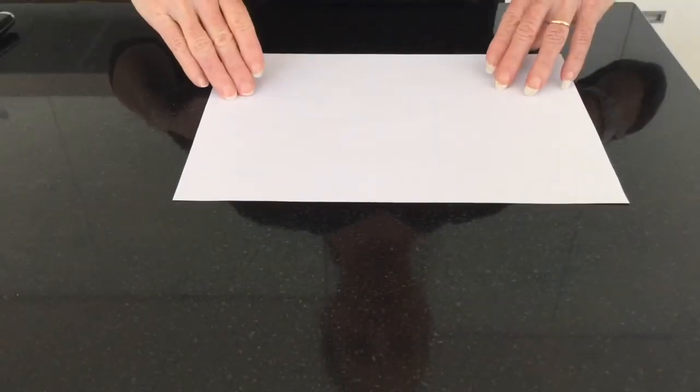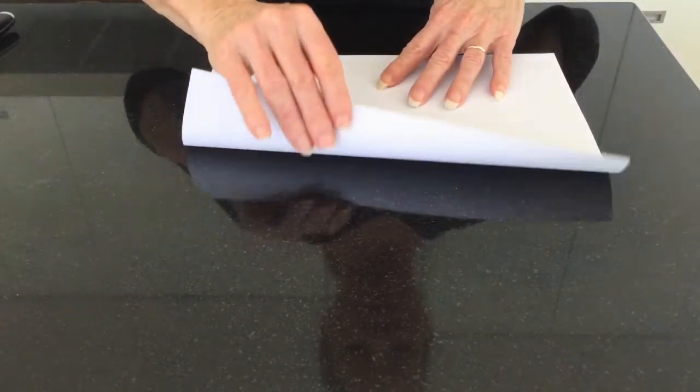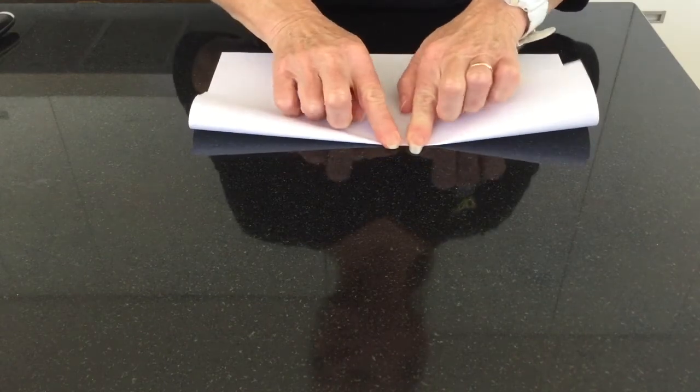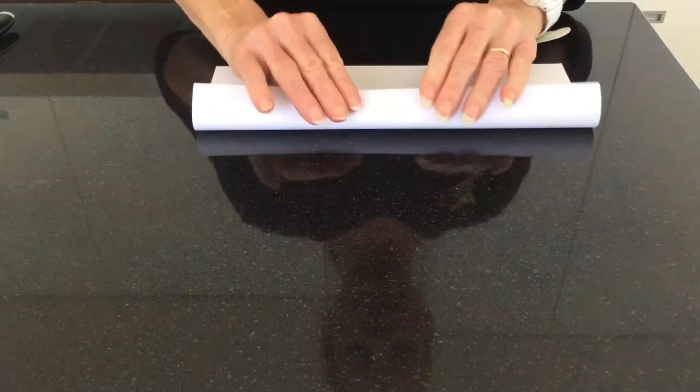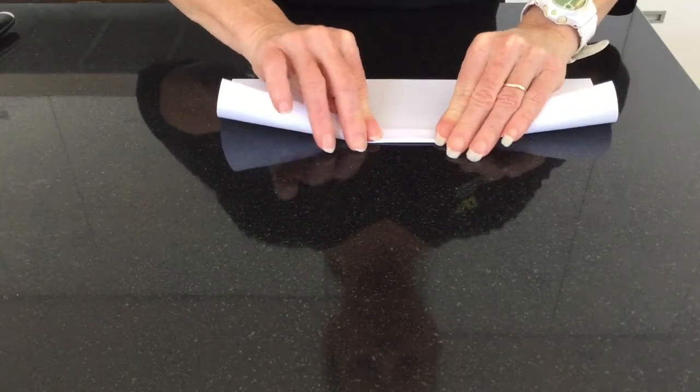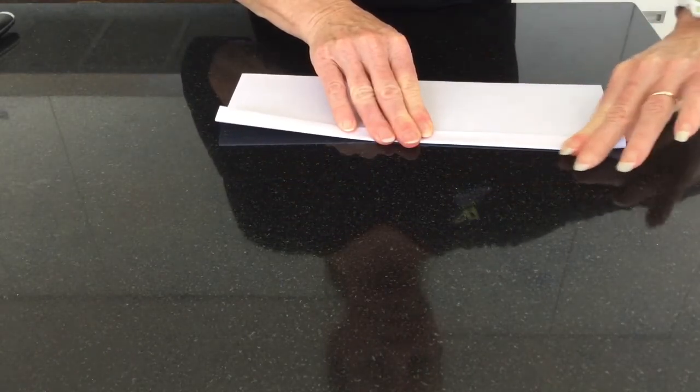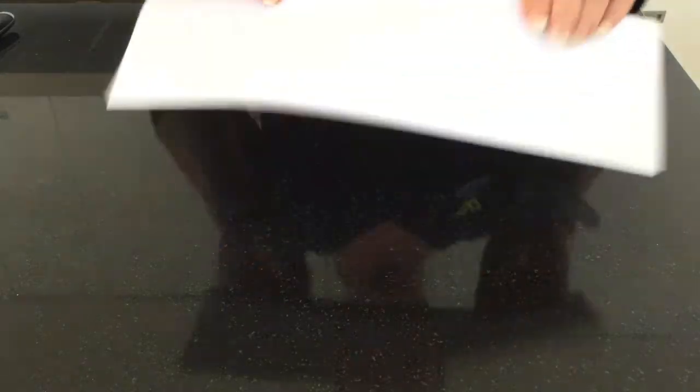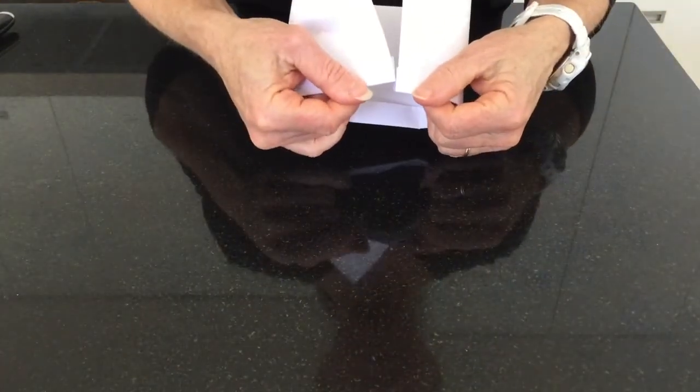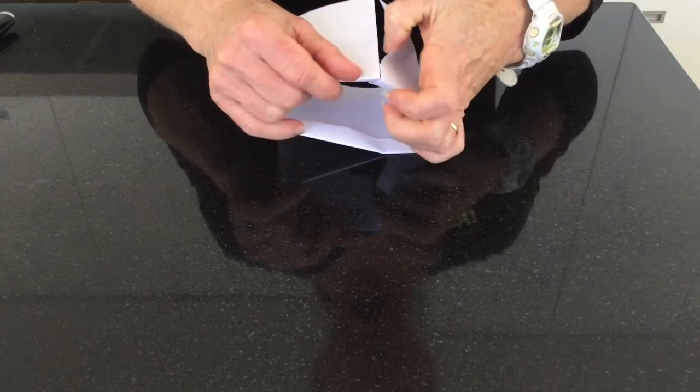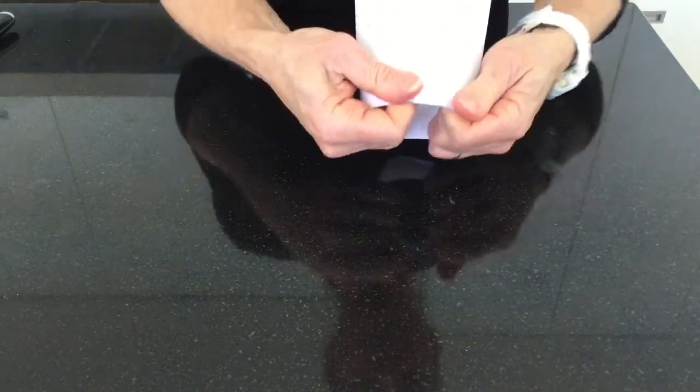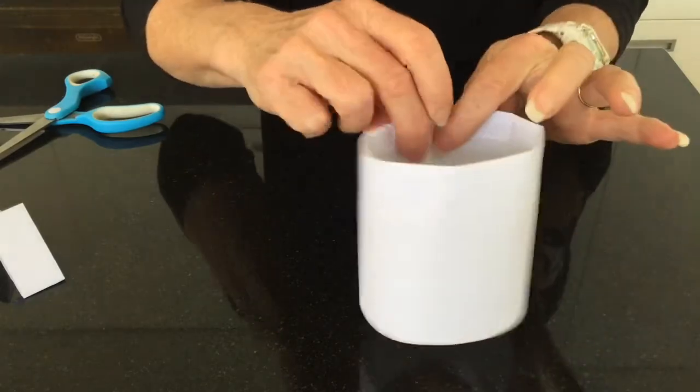Take a piece of A4 paper. Fold it up to half way. Then fold it again. And fold it again. Now, fold it around and attach it to itself. And attach a little bit of tape to the inside.